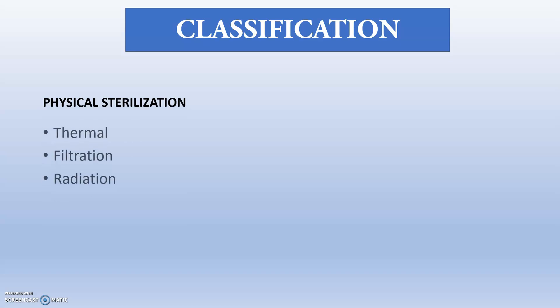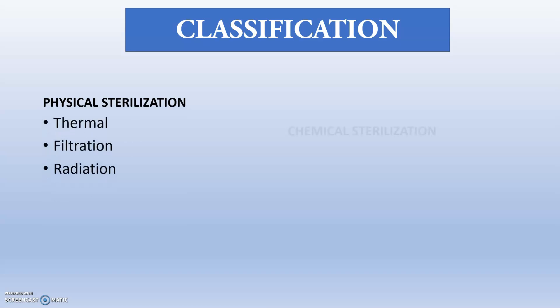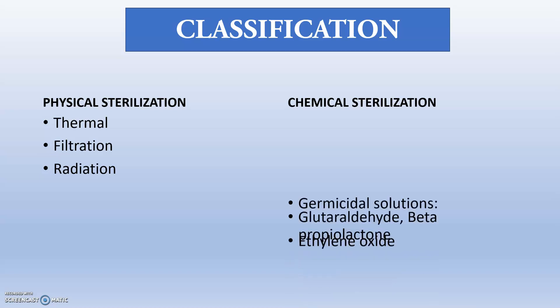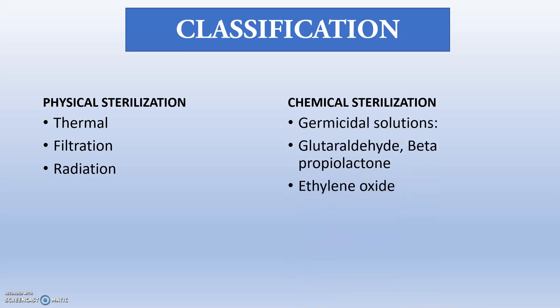So, classification. First of all, we will classify them as physical sterilization and chemical sterilization. Under physical, we will have thermal — that is by using heat energy — next is filtration, and next is radiation. In chemical sterilization, we will mainly use germicidal solutions, neutral aldehyde, beta-propiolactone, ethylene oxide, etc.